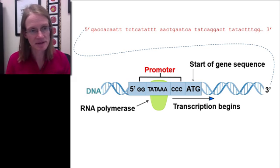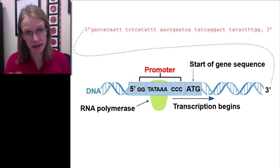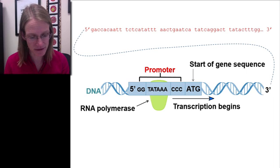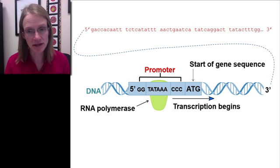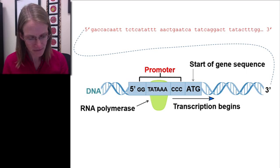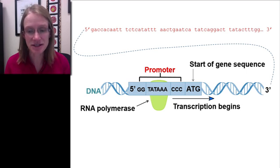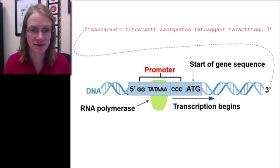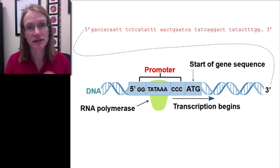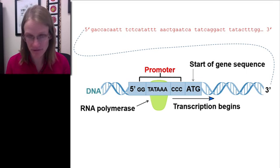The promoter is a sequence of DNA on the coding strand where RNA polymerase — a different enzyme — comes in and attaches to the DNA. RNA polymerase brings in nucleotides and matches them using Chargaff's rule to make RNA. This sequence is very important because it initiates transcription and also sets the reading frame.